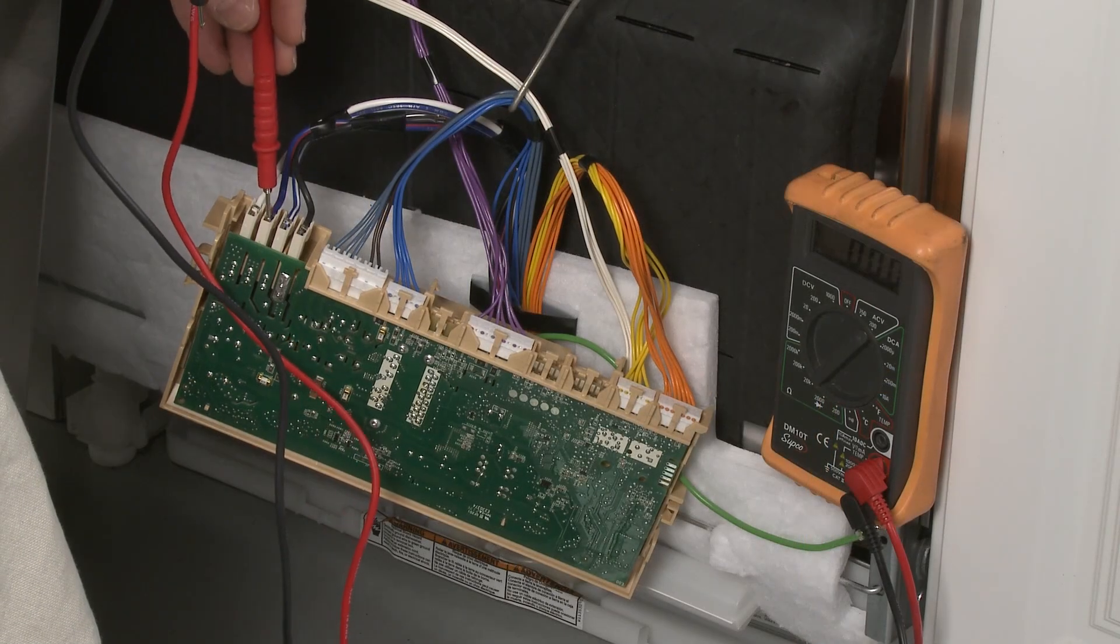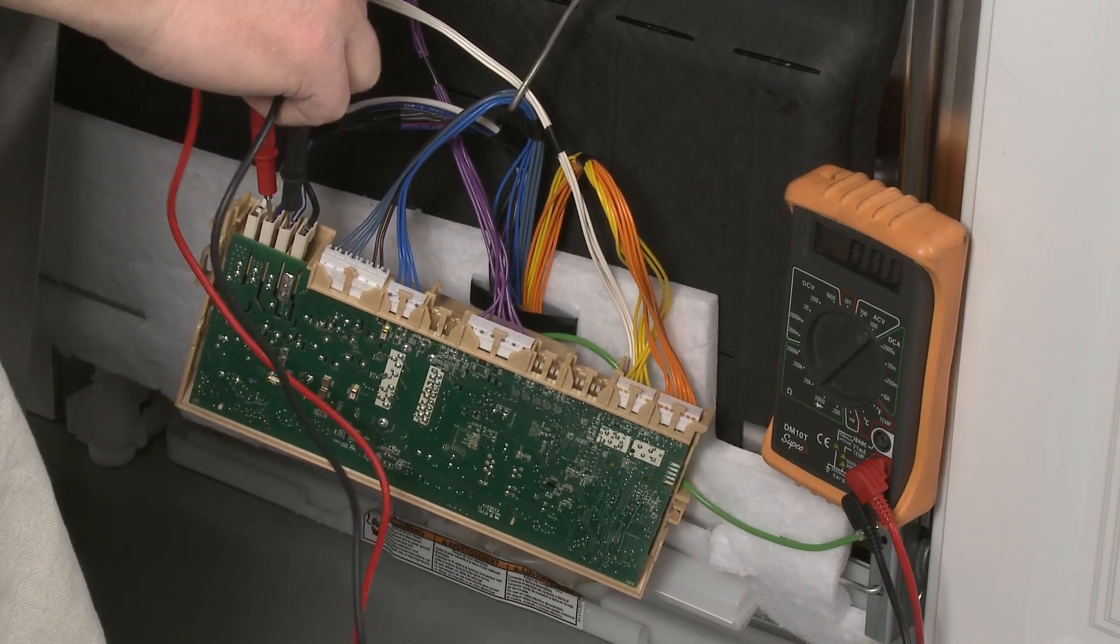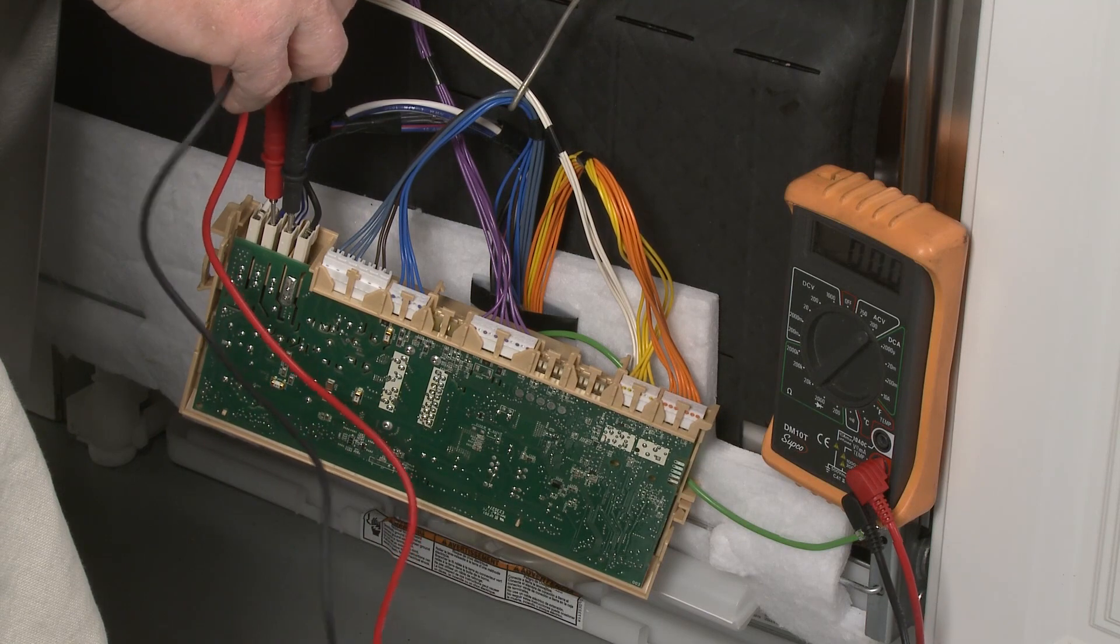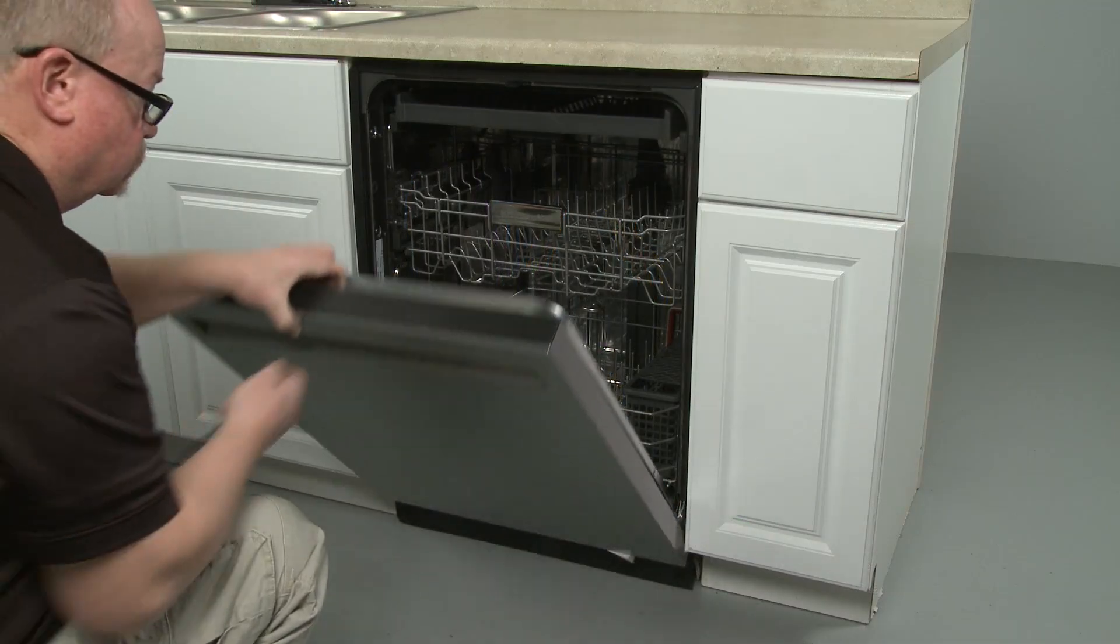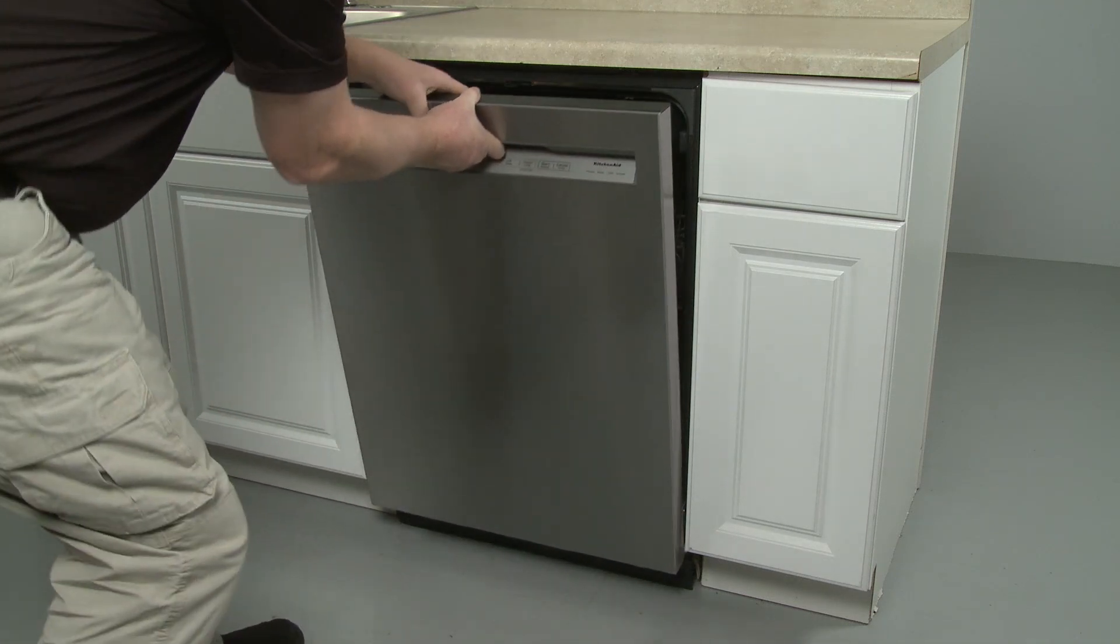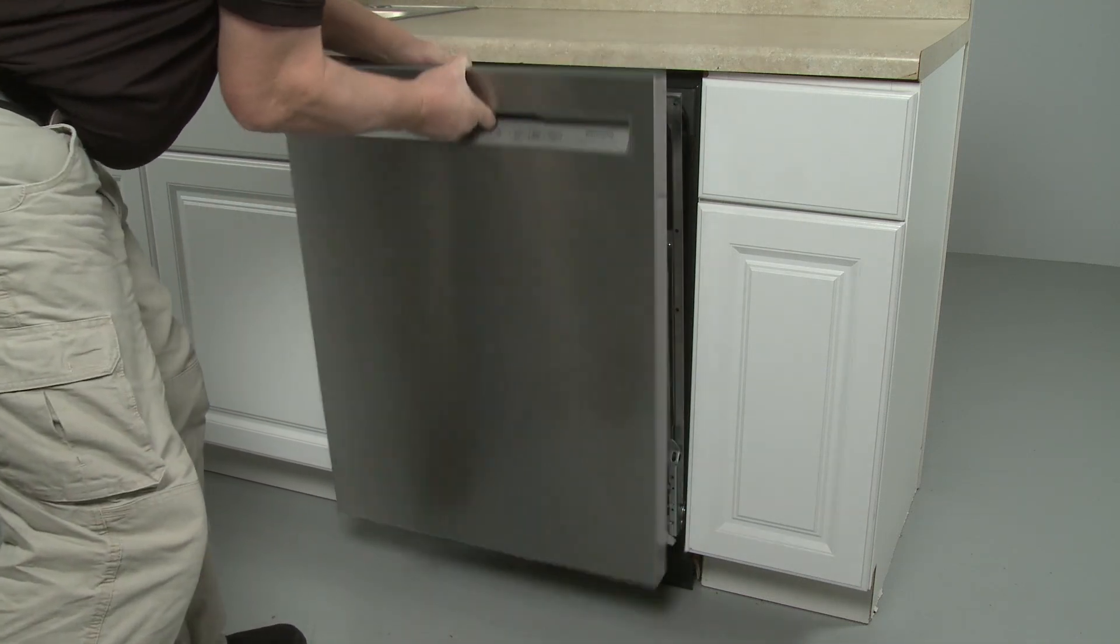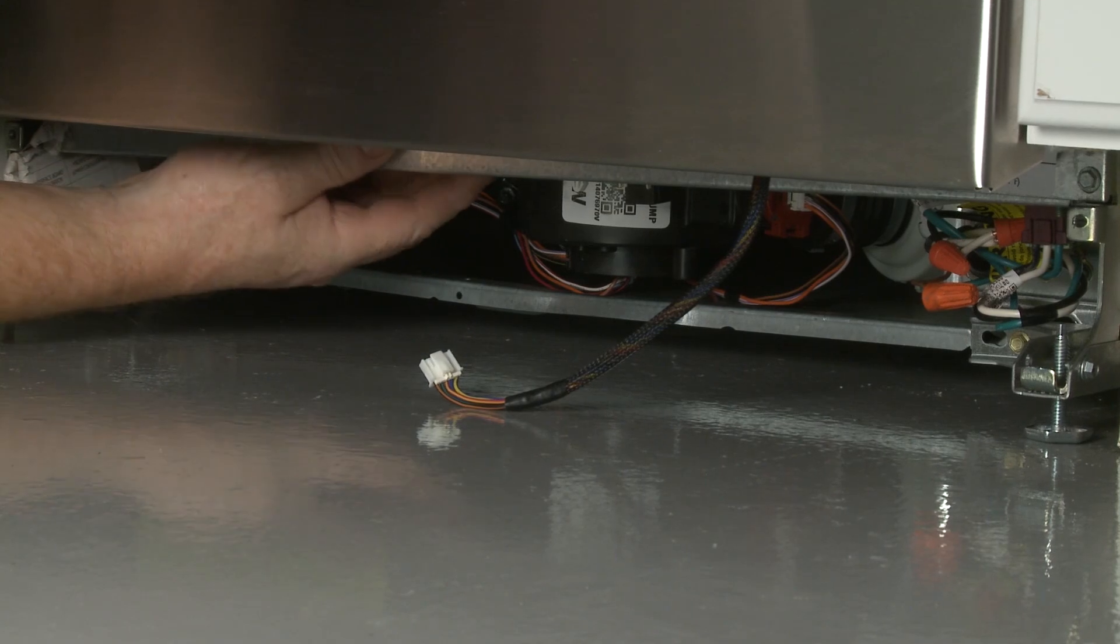You can also use the multimeter to test whether the control board is sending the appropriate voltage to the heater in order for it to operate. The control board may be located behind the outer door panel or behind the lower access panel or panels.